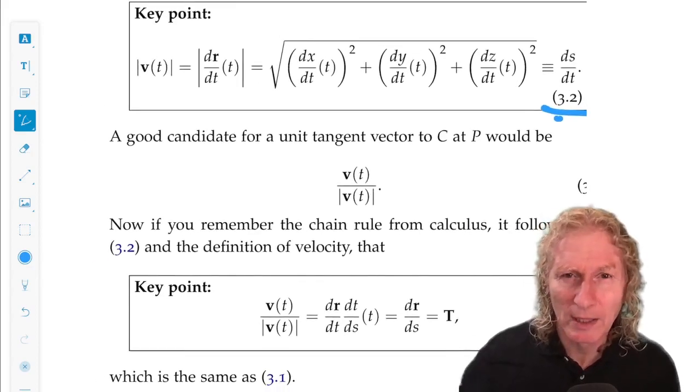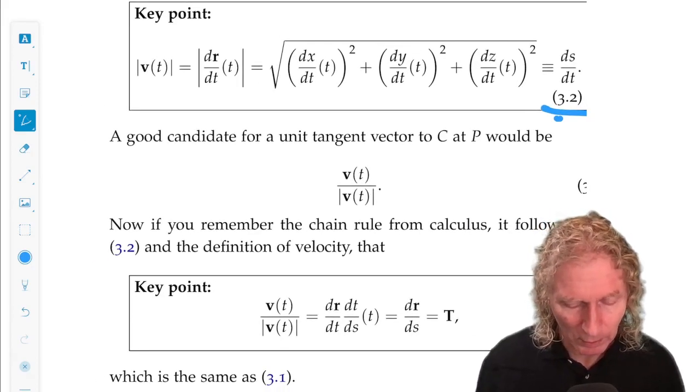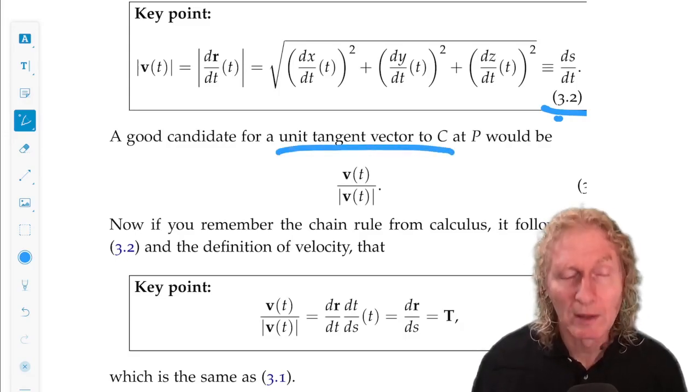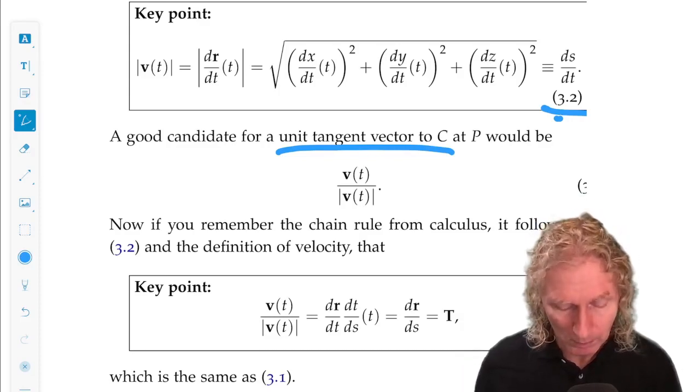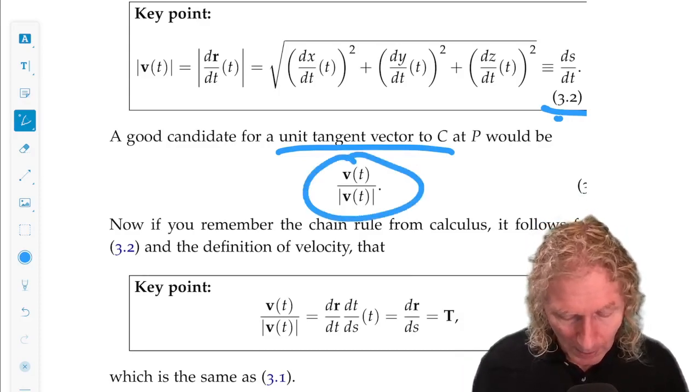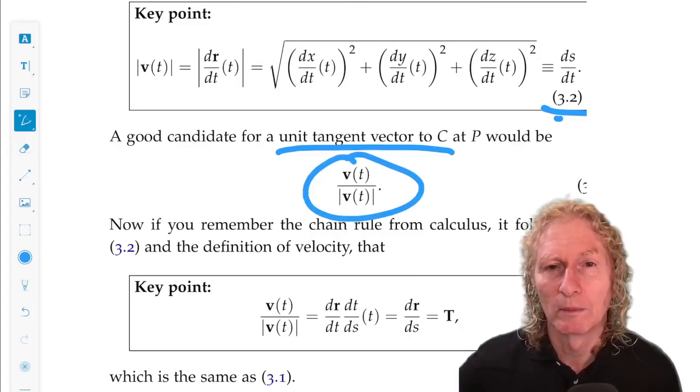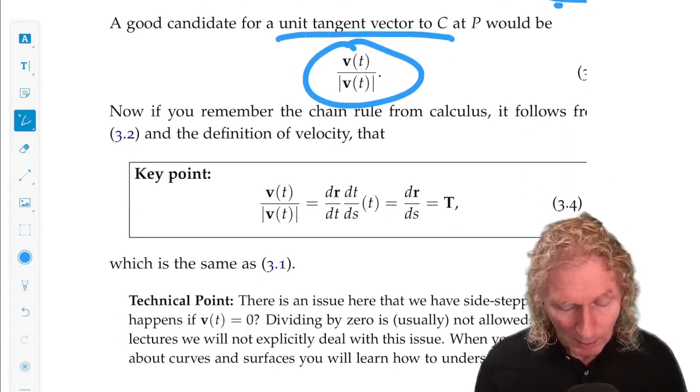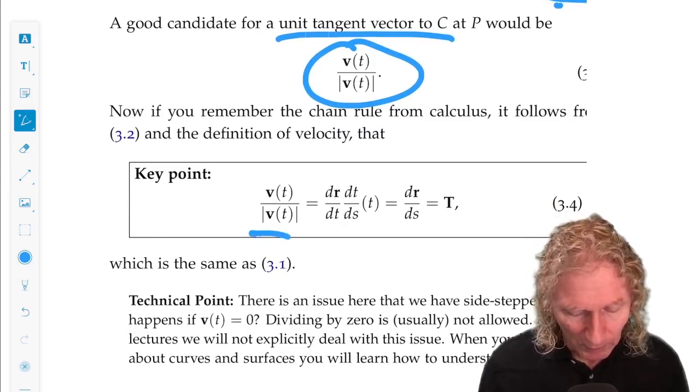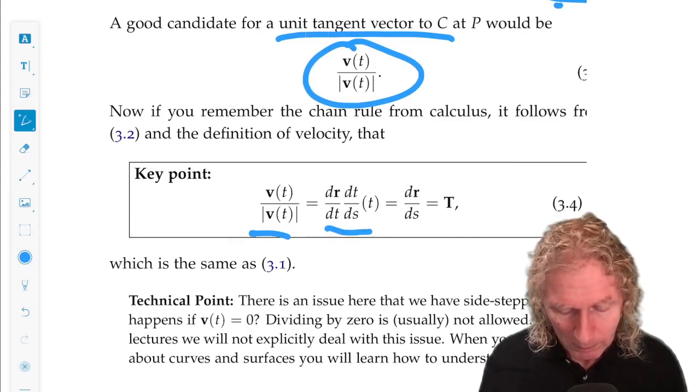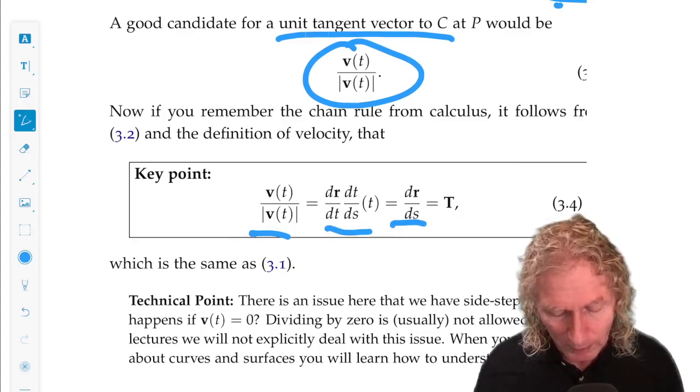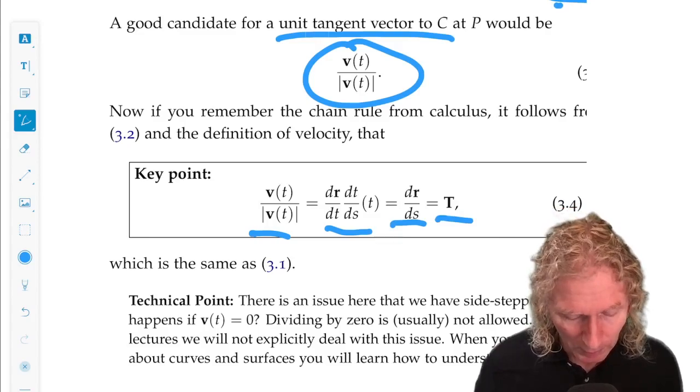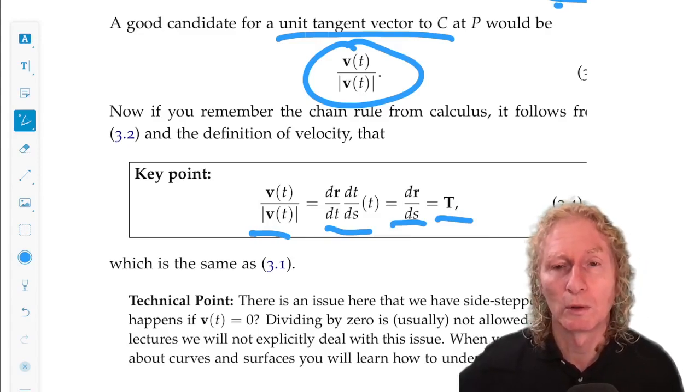A natural candidate for a tangent vector will be the velocity vector divided by its magnitude. And that's exactly the same as dr/ds from the previous page. So here you see that very easily by using a chain rule. And so we see it's unit length, dr/ds, it's tangent to the space curve, and that's called uppercase bold T.